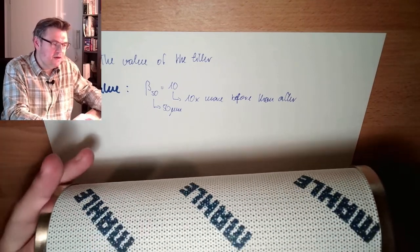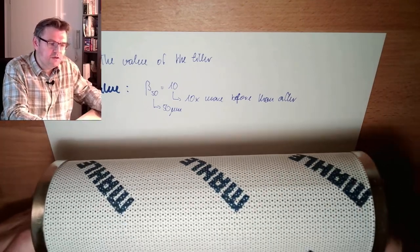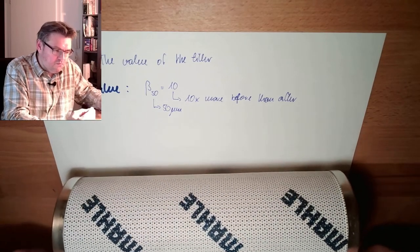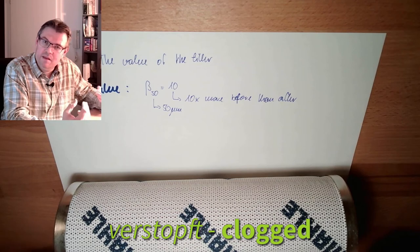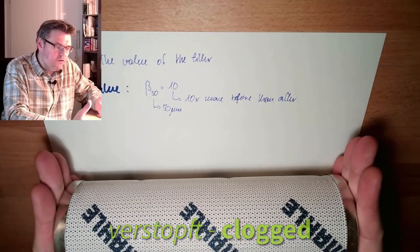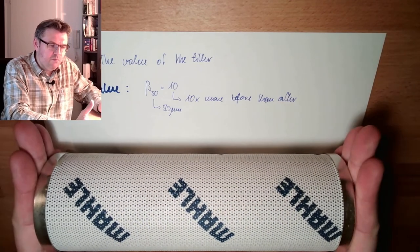The beta value gives how many particles are before the filter and after the filter. This is a filter cartridge. These cartridges will get clogged after a while because they simply hold back the particles. If they are full, if they are clogged, I have to replace this cartridge.